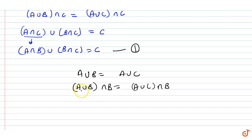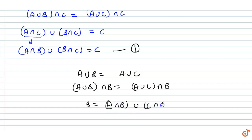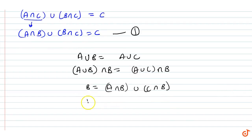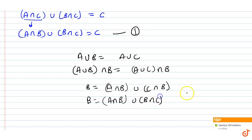On the left-hand side, B intersected with itself is B, and distributing on the right side gives A intersection B union C intersection B. So B equals A intersection B union B intersection C. This will be equation 2.